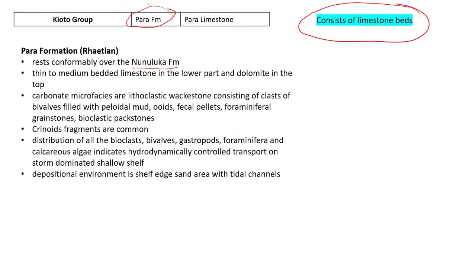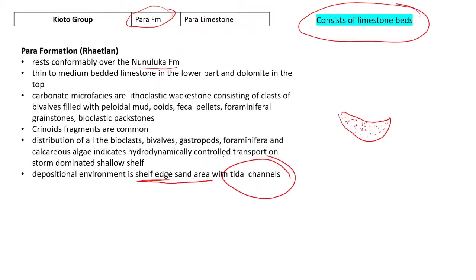The Para formation of the Kioto group — Rhaetian — has carbonate microfacies consisting of lithoclastic wackestone with clasts of bivalves filled with pelloidal mud. Fecal pellets, foraminiferal grainstones, and bioclastic packstones are commonly found. Crinoid fragments are also common. All these bioclasts — bivalves, gastropods, foraminifera, calcareous algae — were hydrodynamically transported on a storm-dominated shallow shelf. The depositional environment is the shelf edge sand area with tidal channels, as determined from the carbonate microfacies.